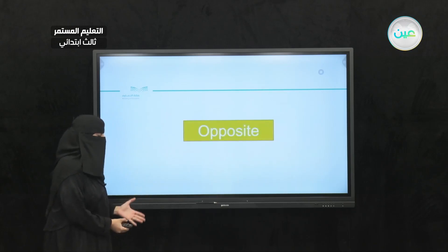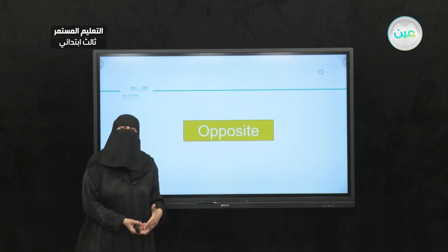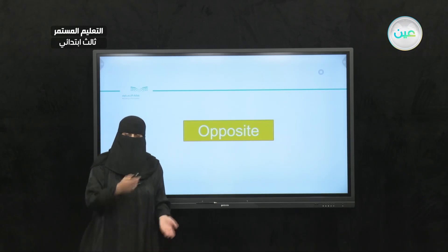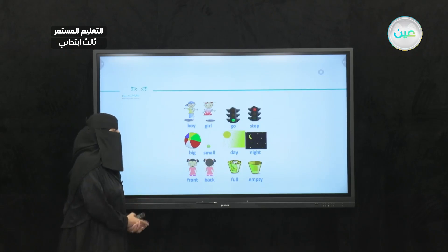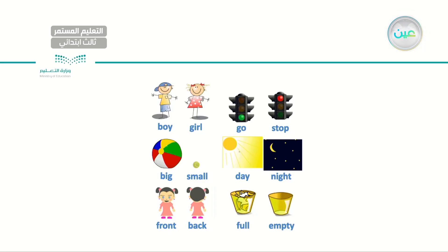Now, as I mentioned earlier, we'll be talking about opposites. What do I mean by opposite? Here I have certain nouns and adjectives that are opposite of each other. For example: boy, girl; go sign, stop sign; big, small; day, night; front, back; full, and empty. As you can see, they look like each other but they are completely opposite.